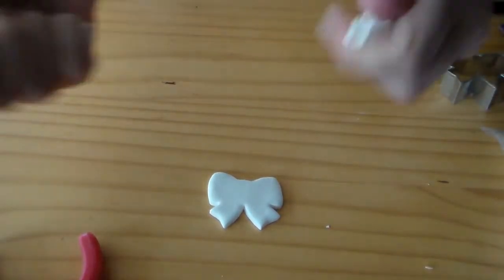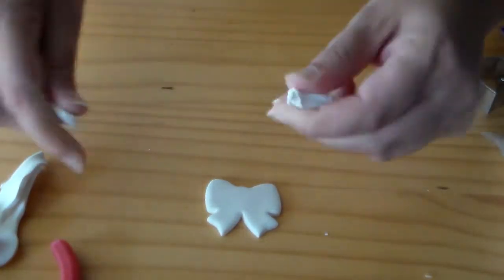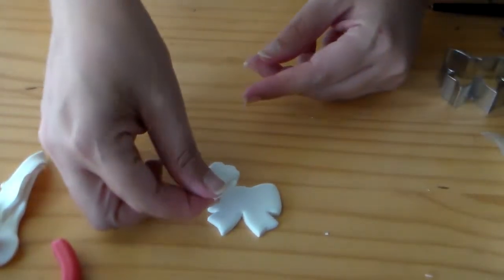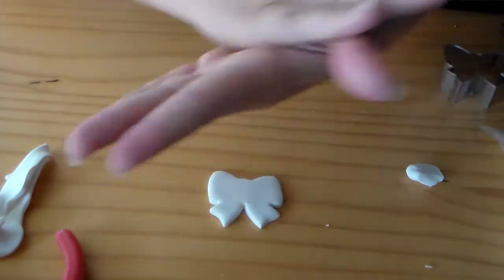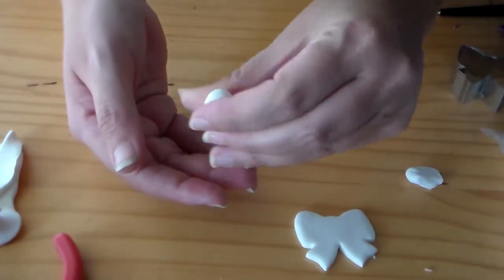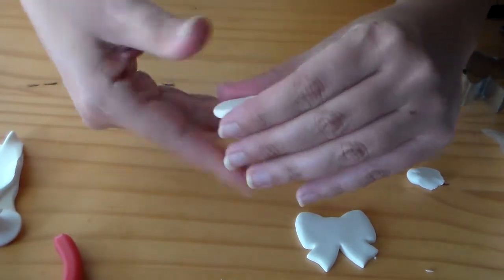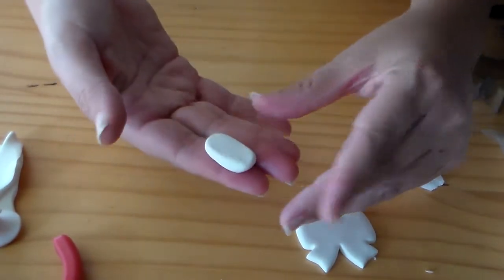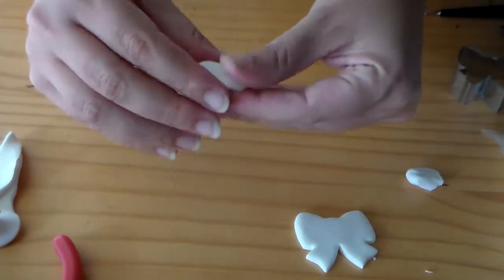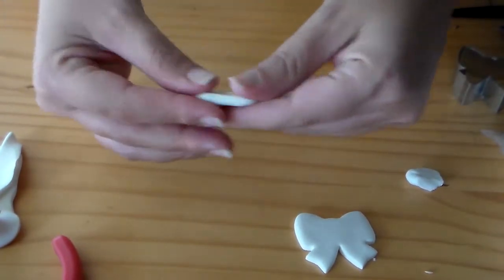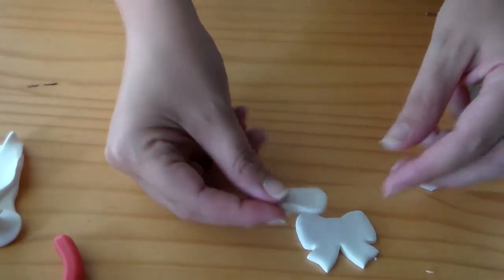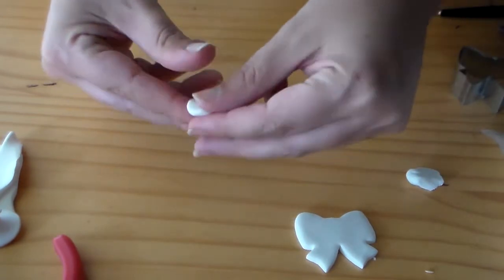Then take another chunk of your leftover clay about the size of one side of the bow, and then roll it between your palms and get it nice and conditioned. Then start to flatten it out into an oval.